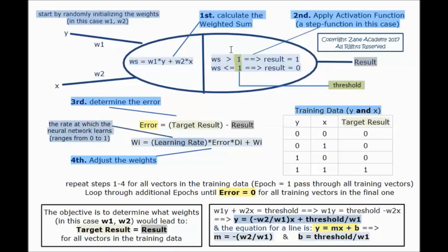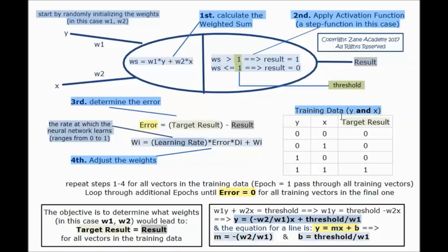Second, we apply an activation function — in this case a step function with the threshold equal to 1. So if ws is greater than 1, the result is 1; if ws is less than or equal to 1, the result is 0. Third, we determine the error: error = target result minus result.